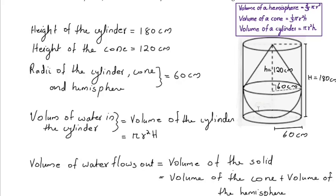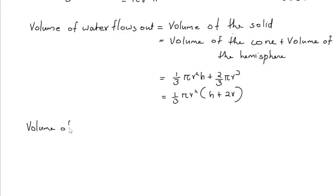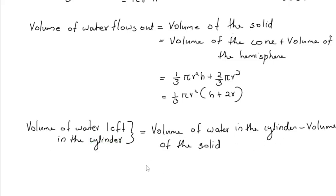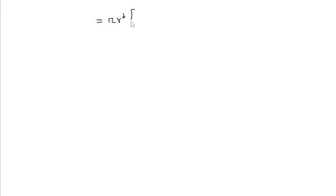To find the volume of water left in the cylinder, subtract the volume of the solid from the volume of water in the cylinder. Volume of cylinder minus volume of solid gives: pi r squared H minus (1/3) pi r squared (h + 2r). Taking pi r squared as common: pi r squared times [H minus (1/3)(h + 2r)].